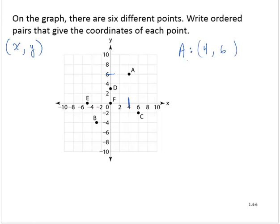Point B has an x-coordinate of -3 and a y-coordinate of -4.